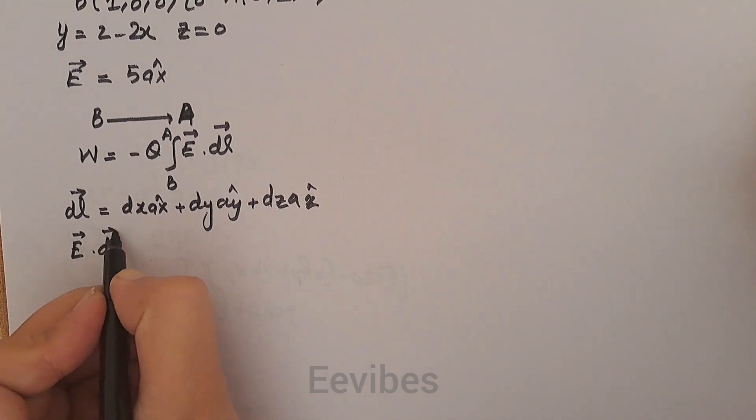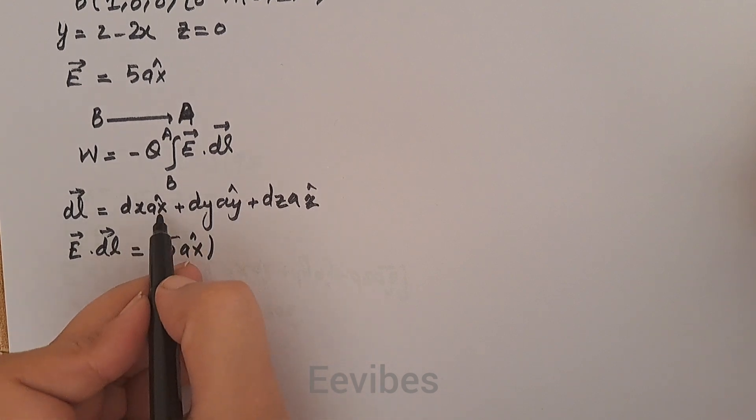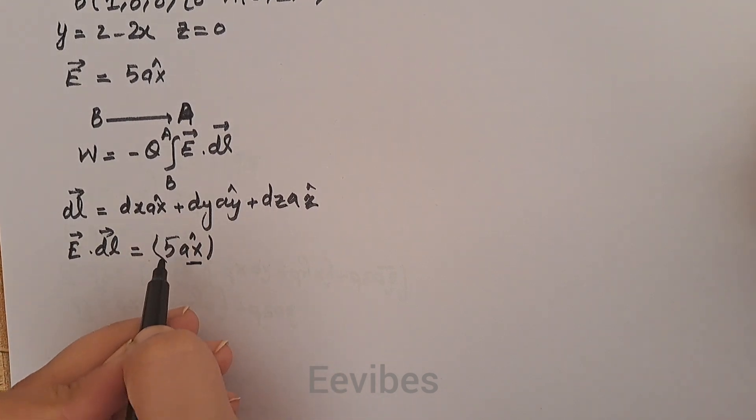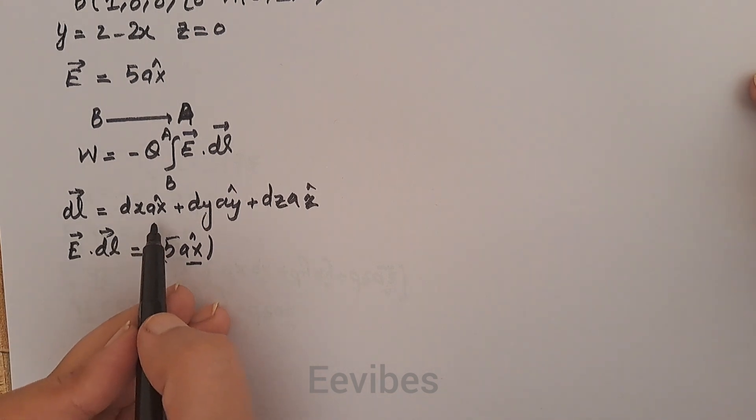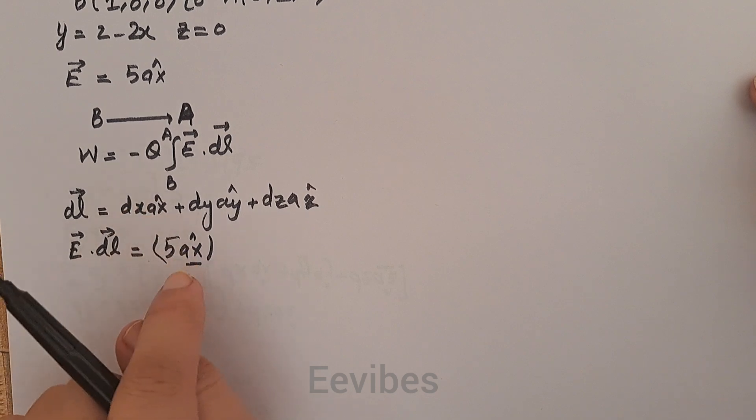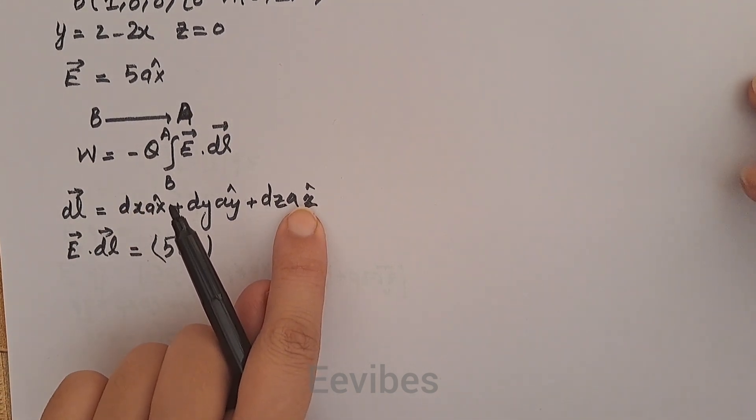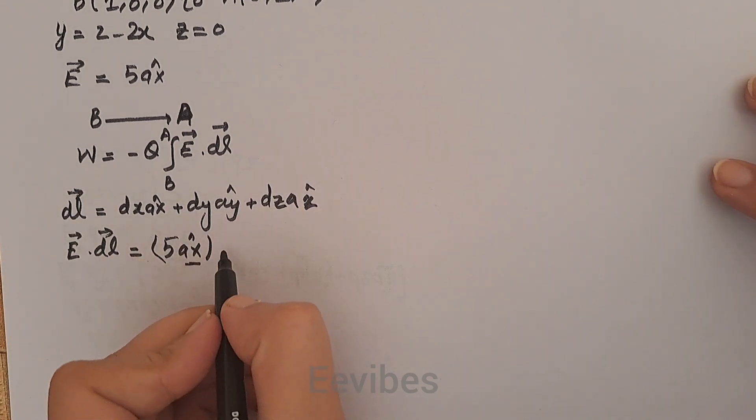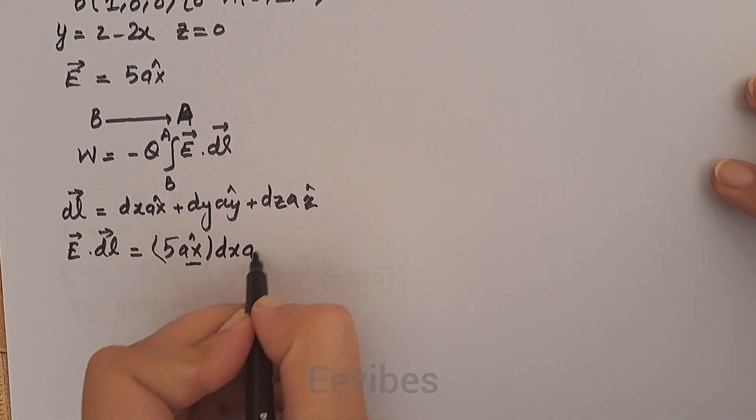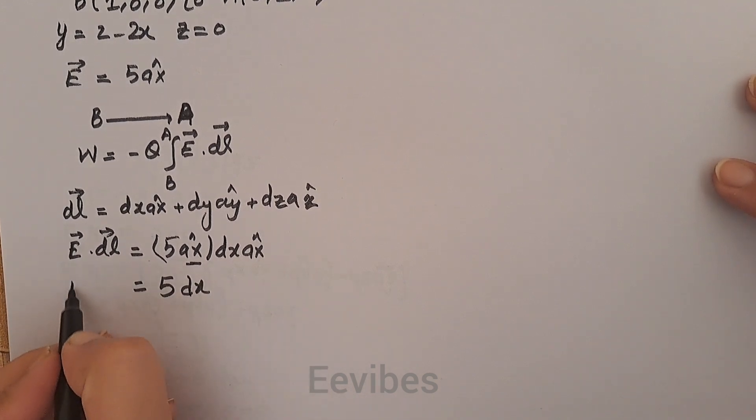Since E = 5ax̂, it can be seen clearly that only the ax component of this field is present. The dot product of vectors acting along the same axis is taken only, while ax·ay will result in zero and ax·az will result in zero. The only value that will be present is dx ax̂; rest of the terms become zero, so we will have 5dx. This is the resultant of E·dl dot product.